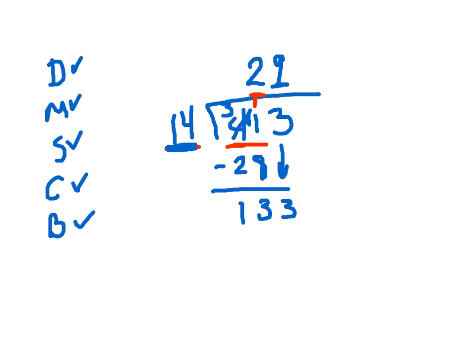Multiply this out. 9 times the 4 is 36. 9 times 1, 12. We'll add that 3 in there. So when we subtract this out, we have 7 left over. So our final quotient is 29, remainder 7.